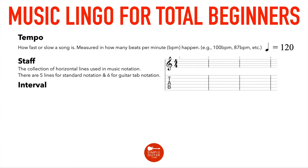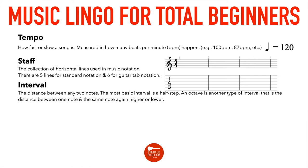An interval is the distance between any two notes. The most basic interval in music is a half step. On the guitar, that's one fret — you can go up a half step or down a half step. Think of the Jaws theme — that's a half step. That is your most basic interval, the space between any two notes.